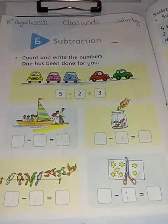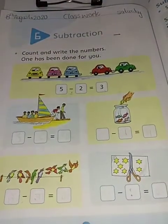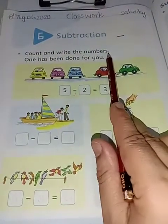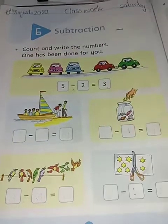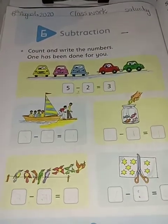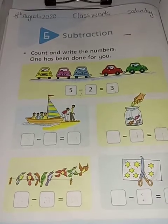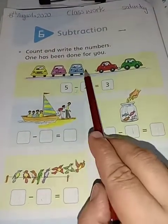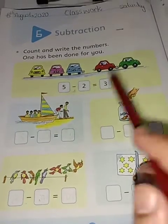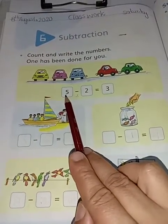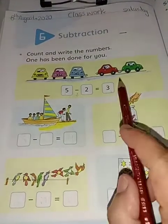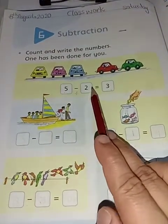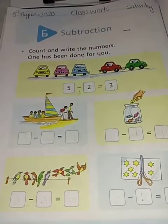Again I repeat, today our topic is subtraction. Count and write the numbers, one has been done for you. یعنی انہوں نے یہاں پر ہمیں کہا ہے کہ پہلے count کرنا ہے اور پھر numbers کو آپ نے خود write کرنا ہے۔ One, two, three, four, five - total five cars ہیں تو یہاں پہ five write کر دیئے ہیں۔ Minus sign ہے, two cars کسی اور طرف کو جا رہی ہیں تو یہاں پہ two ہے۔ Now five minus two - count how many cards are left. One, two, three, so the answer is three.